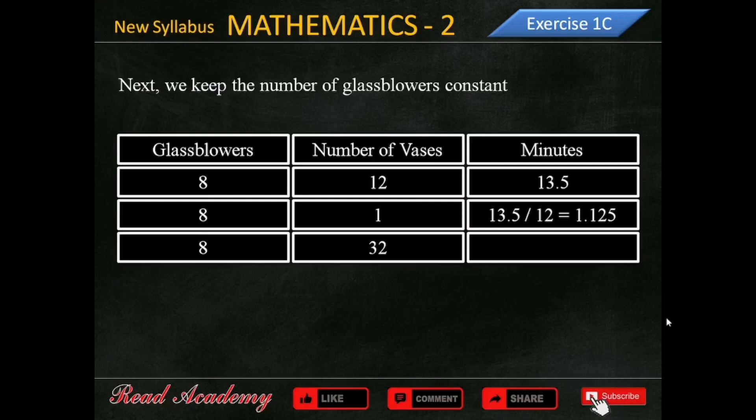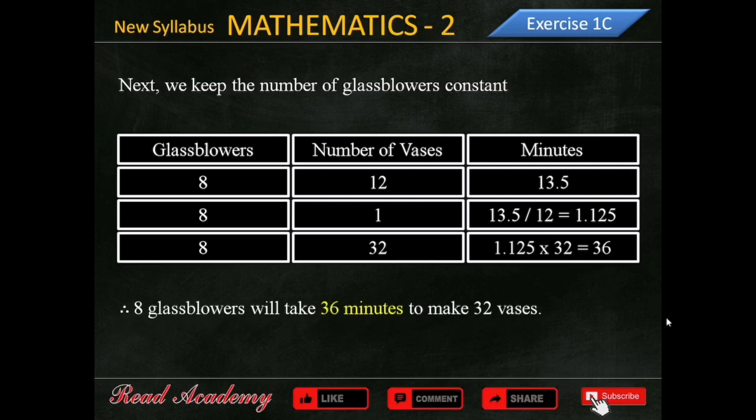32 vases will take 1.125 times 32, which is equal to 36 minutes. So the answer is 8 glassblowers will take 36 minutes to make 32 vases.